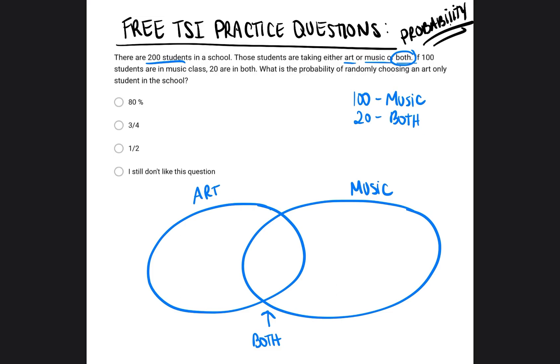What is the probability of randomly choosing an art-only student in the school? Okay, so it says 20 are in both. I'm going to go ahead and write 20 in the center because 20 students are in both art and music. Now it says there are 100 students who are taking music. Now if you notice, it doesn't say that there's 100 students taking music only, but there's 100 students that are taking music. So this can include the 20 students that are taking both.